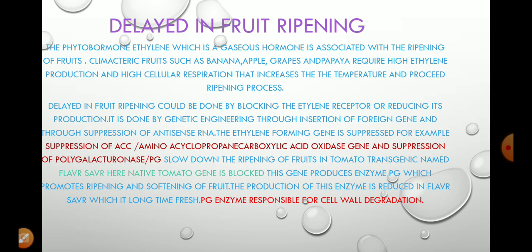The question is how we can stop or delay the fruit ripening process. This is done by two methods: number one is by applying a genetic engineering approach, that is the insertion of a foreign gene, and the second approach is by applying antisense RNA.